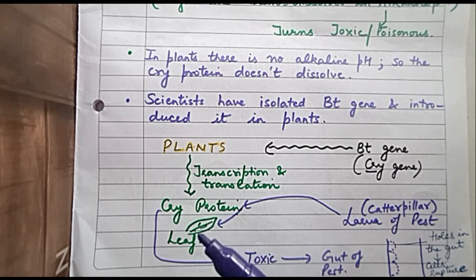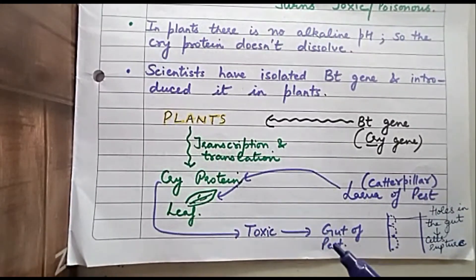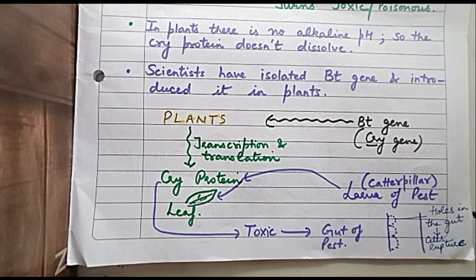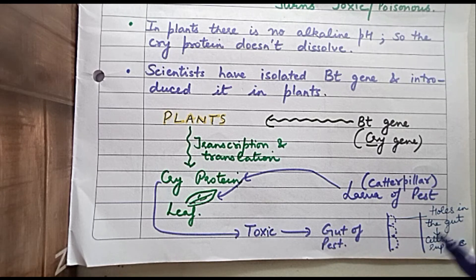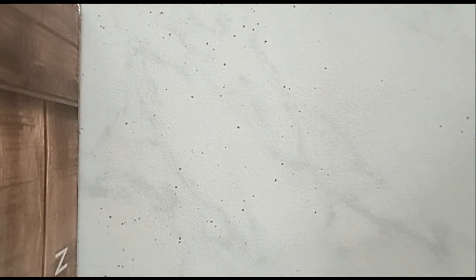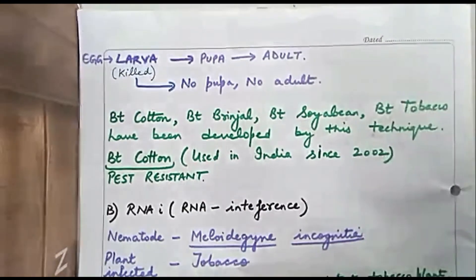The cry protein that the insect has consumed along with the leaf will enter the gut of the pest. Inside the gut, because the pH is alkaline, the toxic substance creates holes or perforations in the epithelial lining of the gut. The cells rupture, and the insect dies.